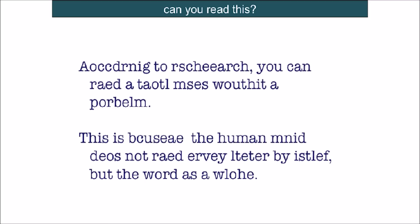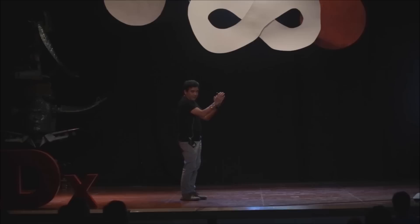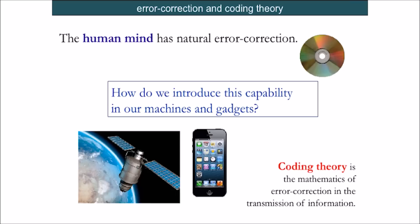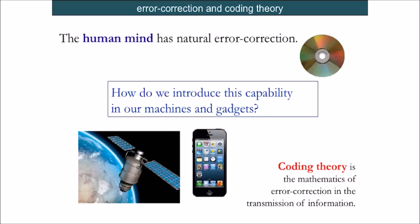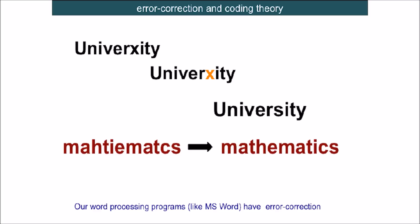Can you read this? Of course, we can all read this. Because according to research, we can always read a total mess without a problem. This is because the human mind has what we call error correction capability. This is the ability to look at a corrupted message and guess from that corrupted message the correct message. Coding theory is an area of mathematics that deals with error correction. The idea is to create a mathematics that would mimic that human error correction capability in our machines. Our CD players have, all our gadgets have error correction. Even our word processing programs have error correction. And this program can detect the error here. And this word can actually be corrected, this misspelled word, into the correctly spelled word. This is because of coding theory.